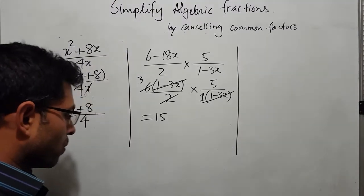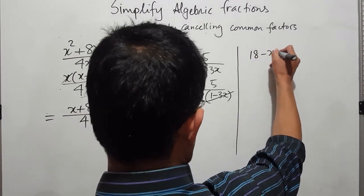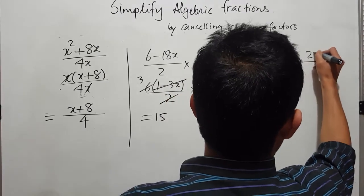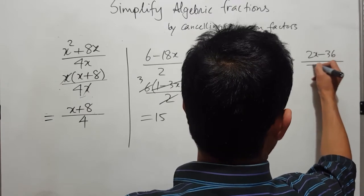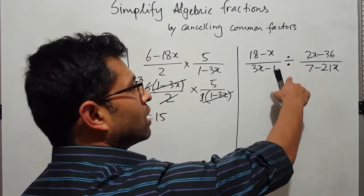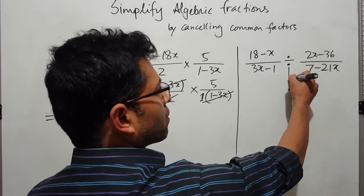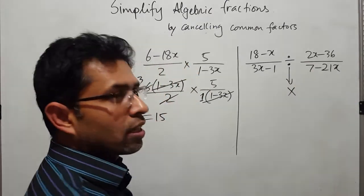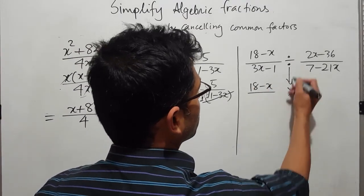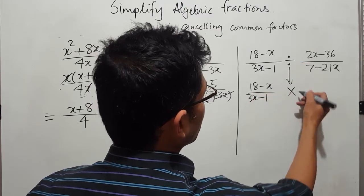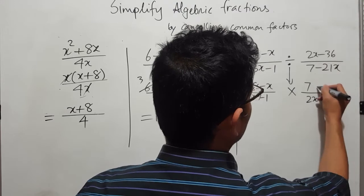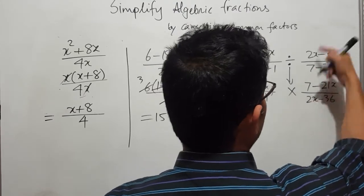Now look at another example: (18 minus x) over (3x minus 1), divided by (2x minus 36) over (7 minus 21x). Since this is a fractional division, you need to convert it to multiplication and flip the second fraction — the same principle we use for arithmetic fractions. So we rewrite it as (18 minus x) over (3x minus 1) times (7 minus 21x) over (2x minus 36).